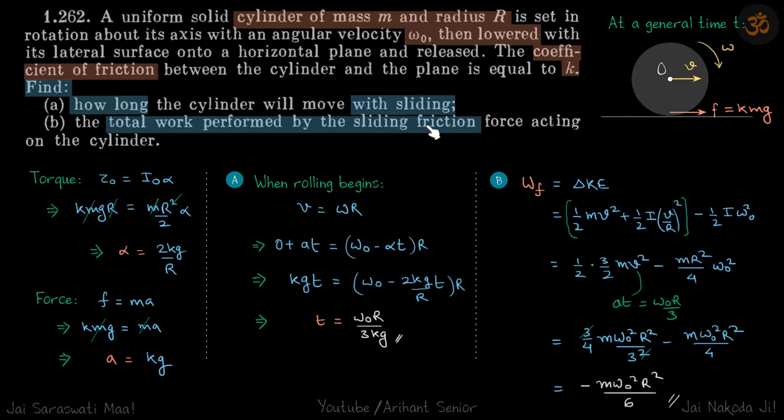You can imagine that if the surface were smooth, the cylinder would just stay where it is and the bottom point would go towards left. But because the surface is rough, the friction will now act in the opposite direction.